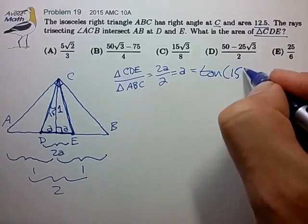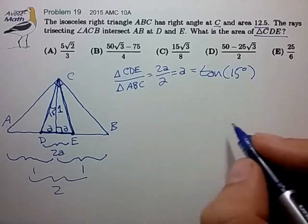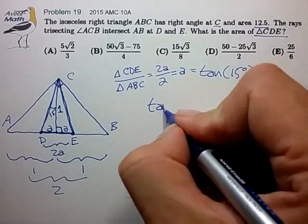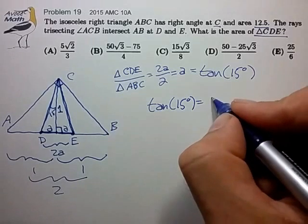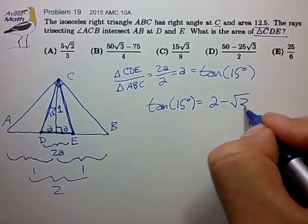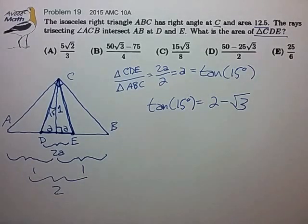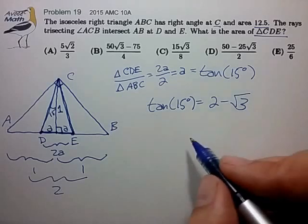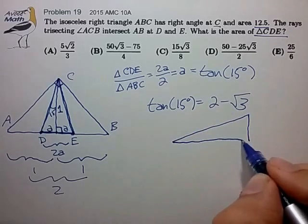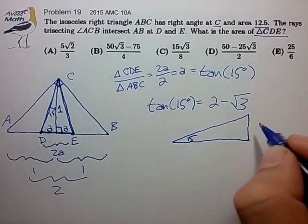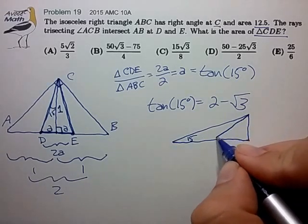And what is the tangent of 15 degrees? This is a useful number to have in your back pocket. 15 degrees is 2 minus radical 3. And if you don't remember that, there's a very easy construction to see that. You can just draw a 15 degree right triangle and form an isosceles triangle.